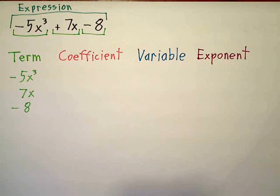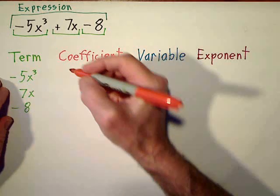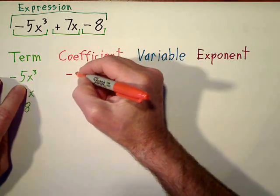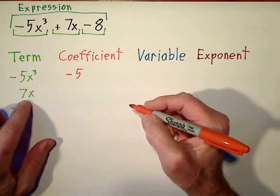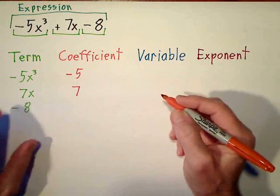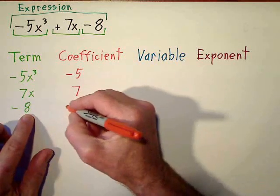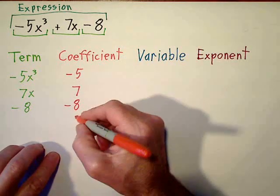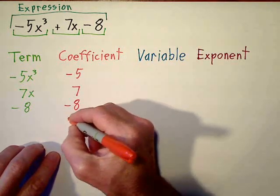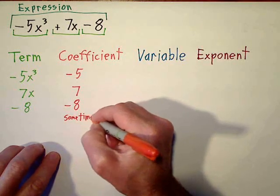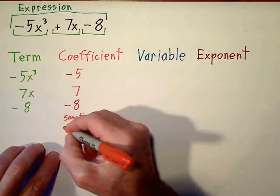The coefficient of each term is basically the number in front of the variable, so the coefficient of this term is negative 5. The coefficient of this term is a positive 7. And we can even refer to this negative 8 as a coefficient. Sometimes we'll just call this a constant.